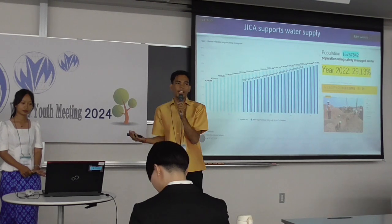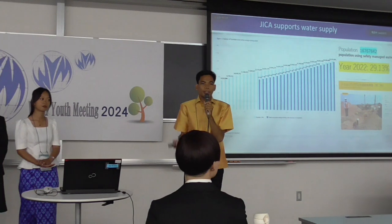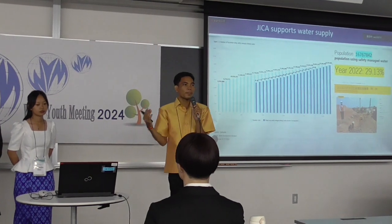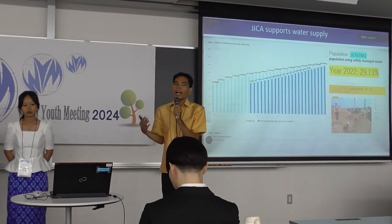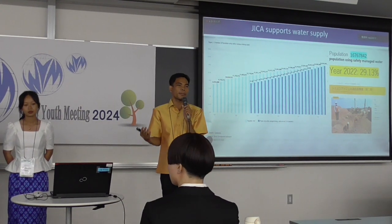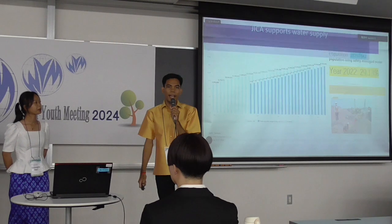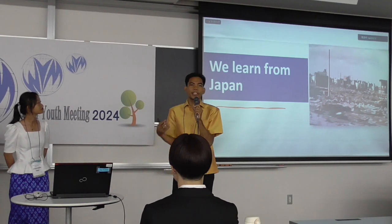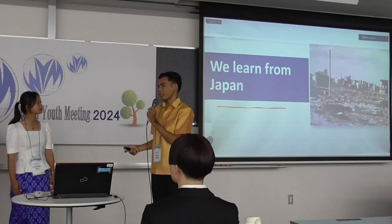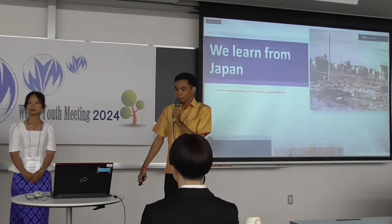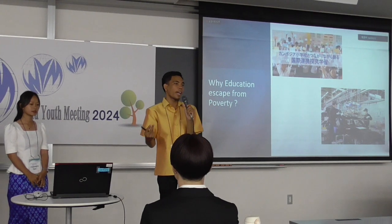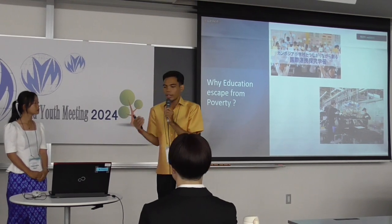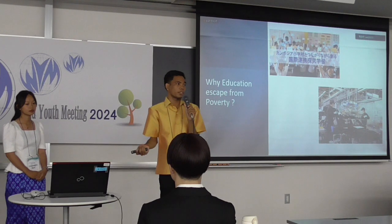Not just electrification — water supply was also supported by JICA. Even electrification and drinkable water in Cambodia are now better. What we can learn from Japan is that Japan came to help us a lot, and Japan used to be in the same situation in the past. Now Japan has become one of the highest-developed countries in the world, because Japan is focusing on education. Cambodia would also like to be like Japan.